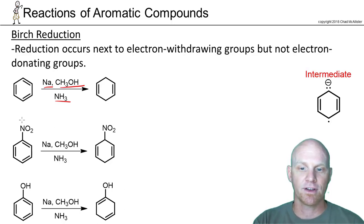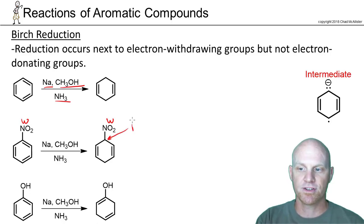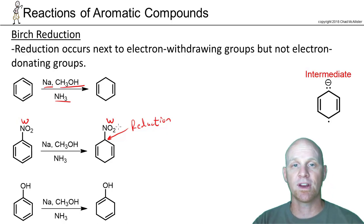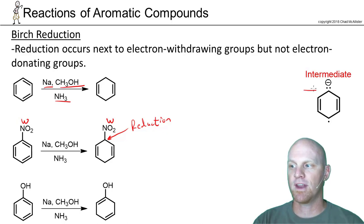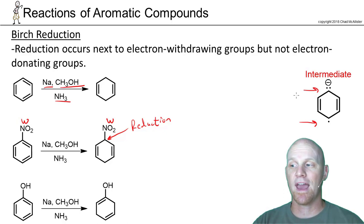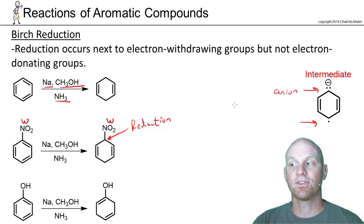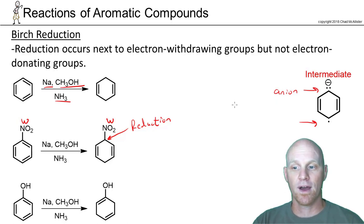If I have an electron-withdrawing group like the nitro group, reduction takes place right immediately next to the withdrawing group — on that carbon and the one opposite it. The reason why is that the intermediate is both an anion and a radical. Where reduction takes place is where the anion is going to be, and a withdrawing group will stabilize that anionic intermediate — that's why it happens there.